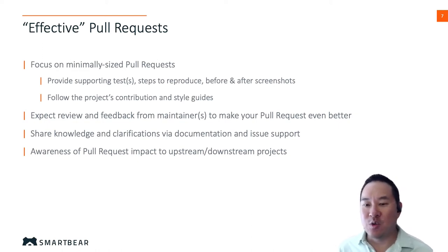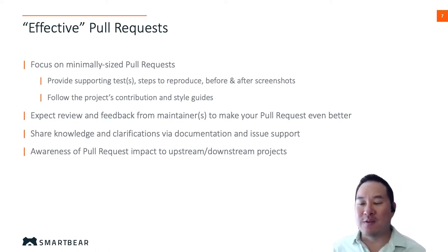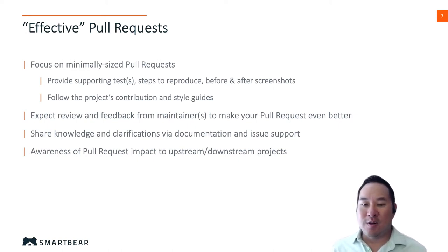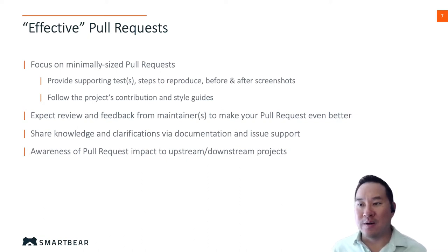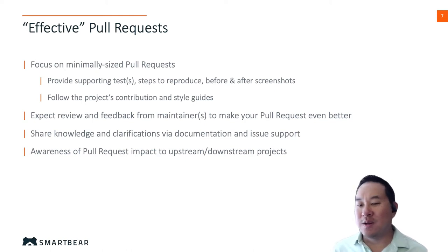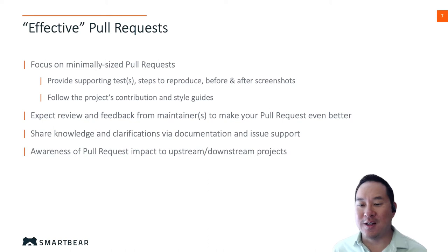But during testing, a reviewer might discover a related problem that may or may not have been caused by your code change. Regardless, the project itself might be missing related functional tests that you are not aware of. So you might be requested to update your code and pull request to also address the newly discovered gap in functionality and tests.